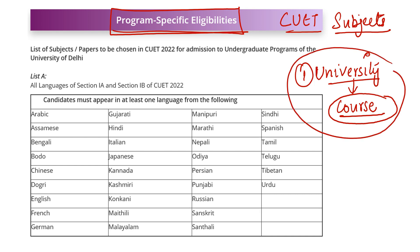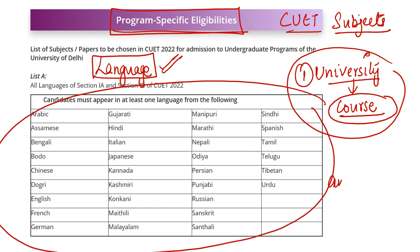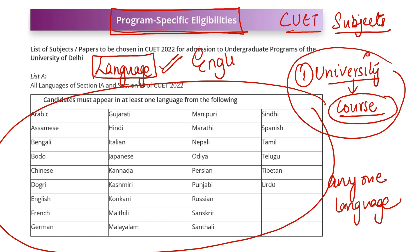Now here is a list of which exams you have to give. Mostly, in every BA, B.com, and BBA, you will have to give a test of one language. You will choose any one language. In some courses English is compulsory, but mostly you can choose one language.